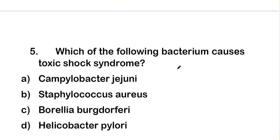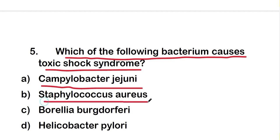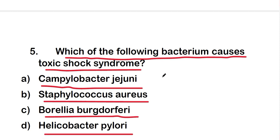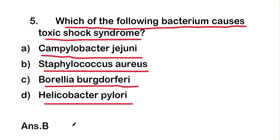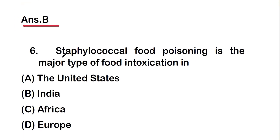The next question is: which of the following bacterium causes toxic shock syndrome? The options are Campylobacter jejuni, Staphylococcus aureus, Borrelia burgdorferi, or Helicobacter pylori. The right answer is option B — Staphylococcus aureus — which causes toxic shock syndrome.